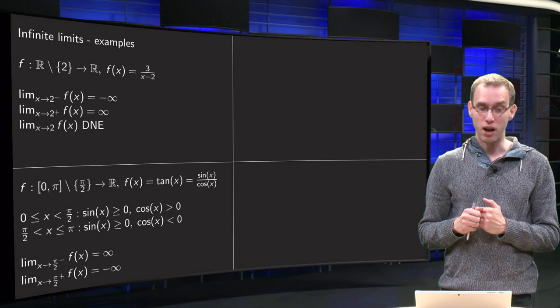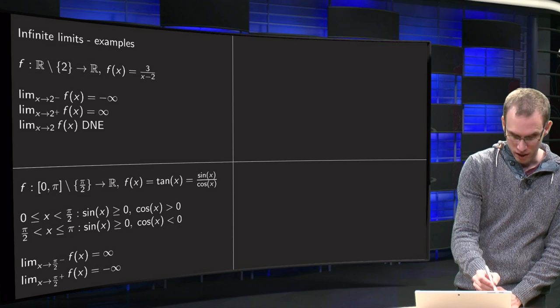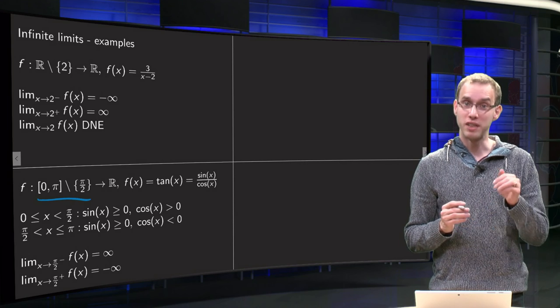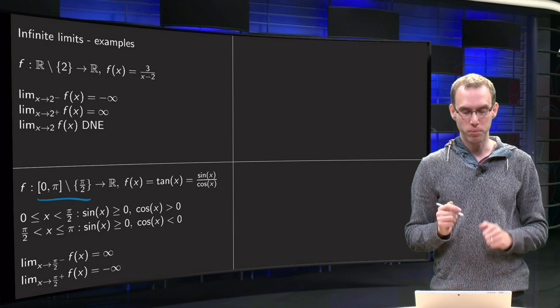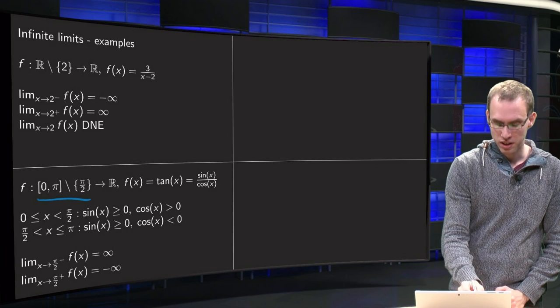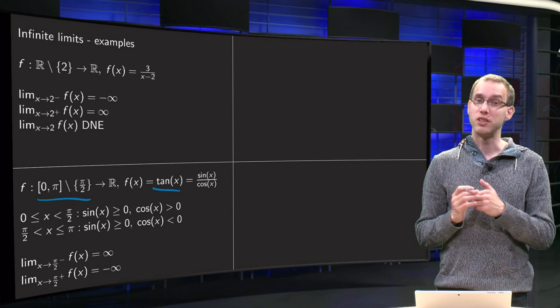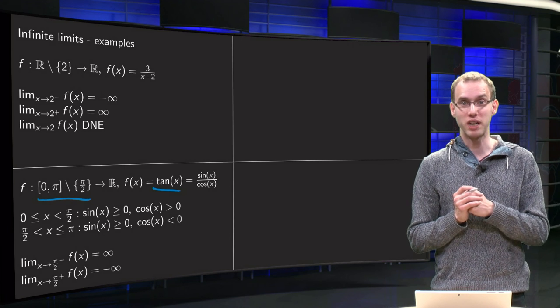Second, going from, look at the domain, (0, π) with the exception of π over 2, so small domain, onto ℝ, f(x) equals the tangent of x. Ok, we are going to use that one a lot.